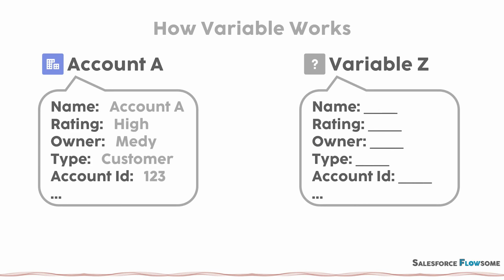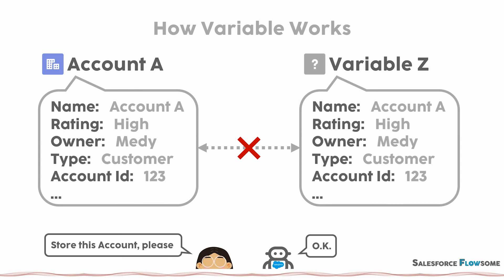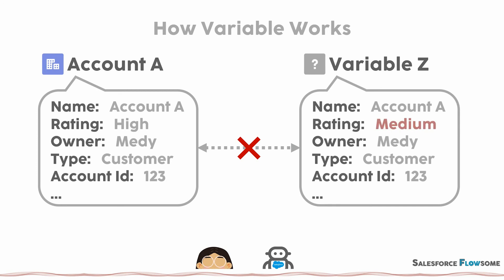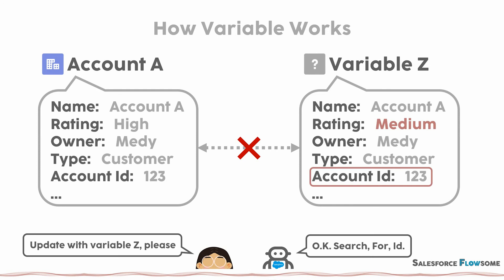A very important concept about record variables is that they don't connect to your actual records. When you store a record into a variable, you copy the values into this variable. Then they don't have any links to the original record anymore. You can modify this variable freely and it won't affect the actual record unless you tell the system to do so. When you ask the system to update the records, you provide this variable and the system will check the ID stored in that variable, find a match in your database, and then update the matched record with your variable.